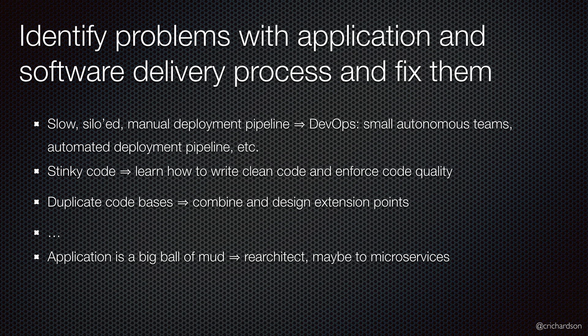When you have software delivery problems, you really want to take a critical look at why you're having issues. If you've got manual processes, you need to automate and embrace DevOps. If your code smells, you need to teach the developers how to write clean code and enforce it with static code analyzers in the deployment pipeline. If you've got duplicate code bases, you need to combine them and design the appropriate extension points. And then, if your applications are big balls of mud, then they need to be re-architected, possibly to the microservice architecture. There's a whole host of solutions you have to employ — microservices solve very specific problems. They're not a cure-all.